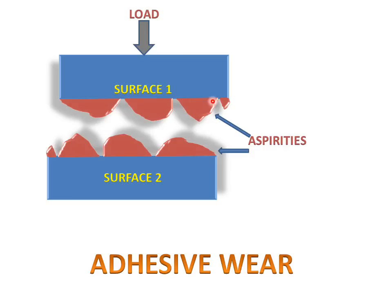These are the surface asperities of the first surface and second surface. This is called peak and valley asperities. And this is the load. When we apply load to the surface, this surface will come into contact with the second surface.